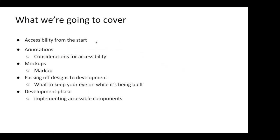What we're going to cover today is how we can incorporate accessibility from the start — all the way from ideation through the design phase through the development phase. Specific to the design phase, we're going to go over annotations and the considerations you must make for accessibility, and map those to mock-ups. We'll also cover passing off designs to the development team, what to watch for while it's being built, and then move into implementing accessible components and testing for accessibility.